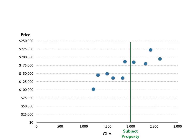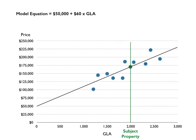We begin by plotting our data from our market. From that data we can estimate a linear regression line, and for this sample we've done that. We see where the regression line crosses our subject property at that point, and we can also look at the model equation of that line, which has been estimated at fifty thousand plus sixty dollars times the GLA.